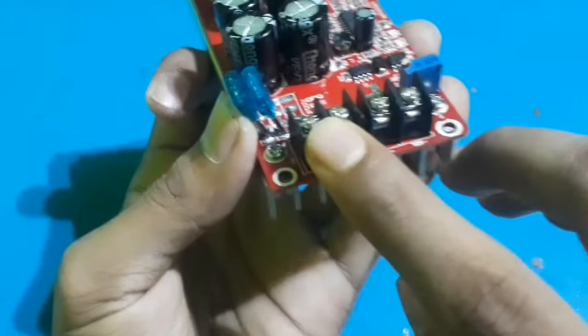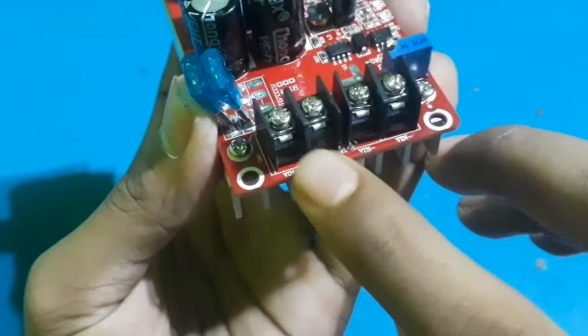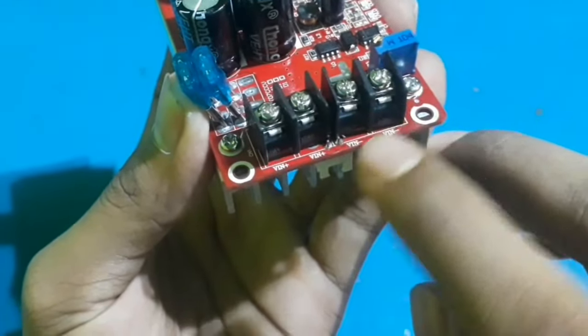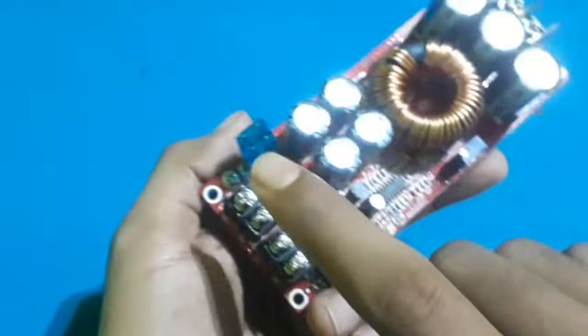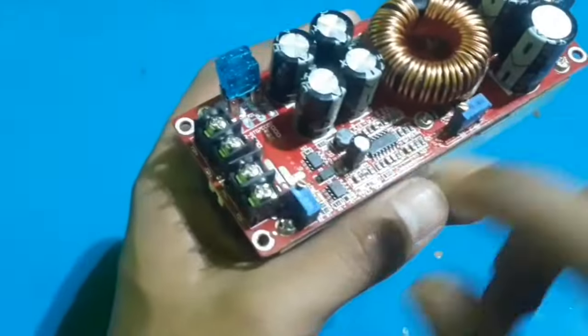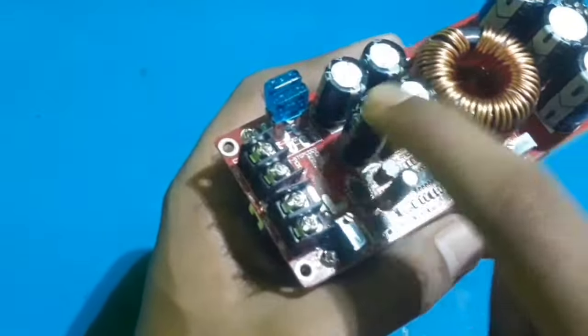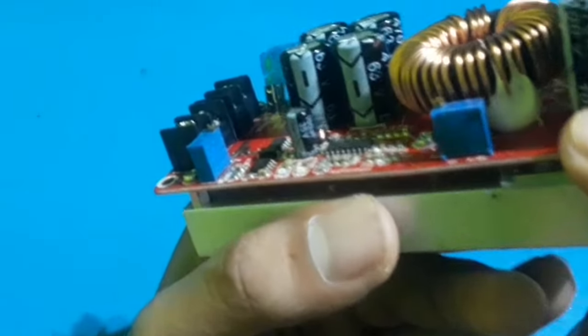You can see there are four terminals, but these two are positive and these two are negative input terminals. These two are parallel connected fuses and these four are input capacitors rated at 63 volts.